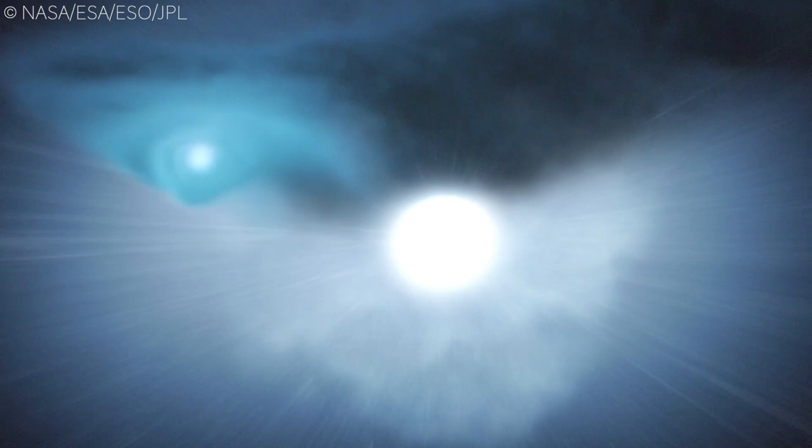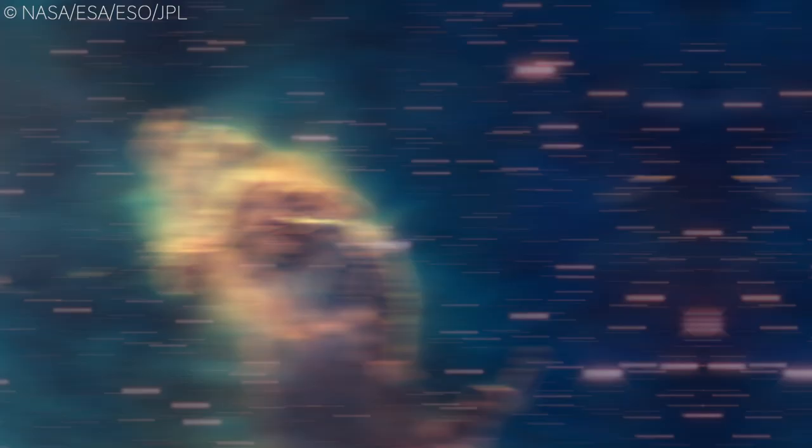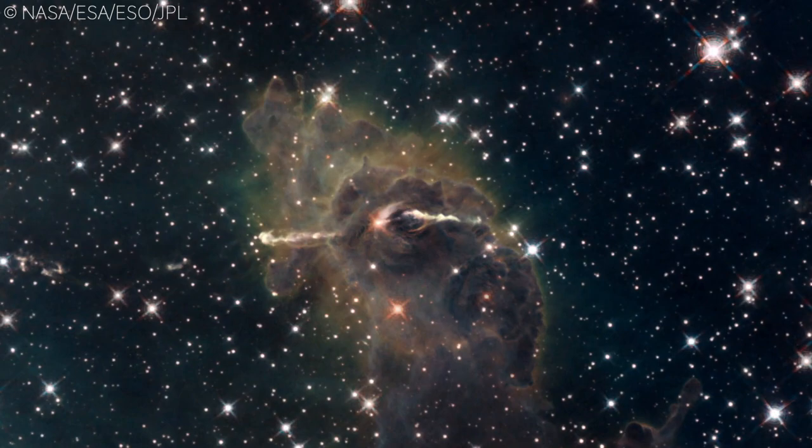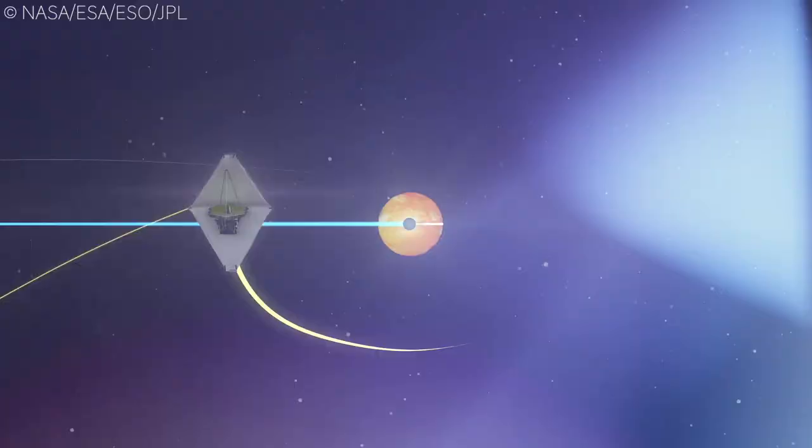Webb is ideal for these investigations because it picks up infrared light, which is effectively heat released by the objects being studied. This allows the telescope to see through dust and even pick up things that are not extremely hot. Moreover, because the telescope is in deep space, it is not affected by the Earth's atmosphere, which interferes with infrared observations.